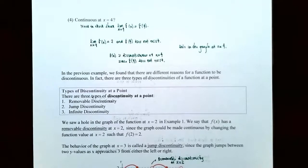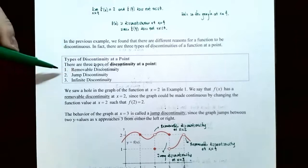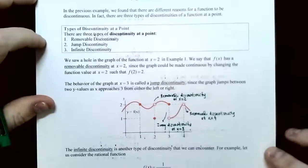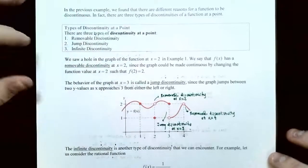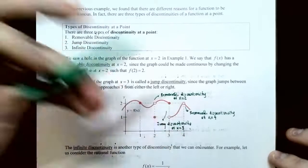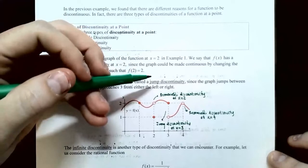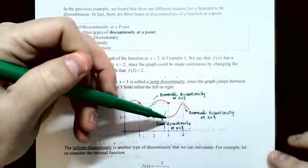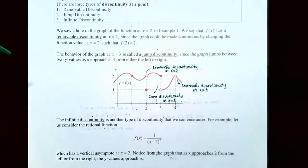In the previous example we saw different types of discontinuities. We can classify them as one of three types. Number one is called a removable discontinuity — at x equals two and x equals four there were holes in the graph, so those are removable discontinuities. A second type is the jump discontinuity — at x equals three, the function jumped from y equals two on the left side to y equals one on the right side.